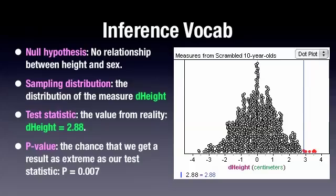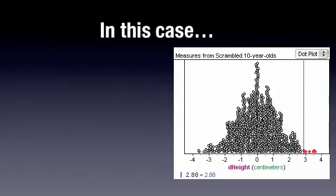So the p-value is the chance that if there were no relationship, you get a result as extreme as the test statistic, and that p-value is 0.007, which is very small. So we reject the null hypothesis. It's less than 0.05.